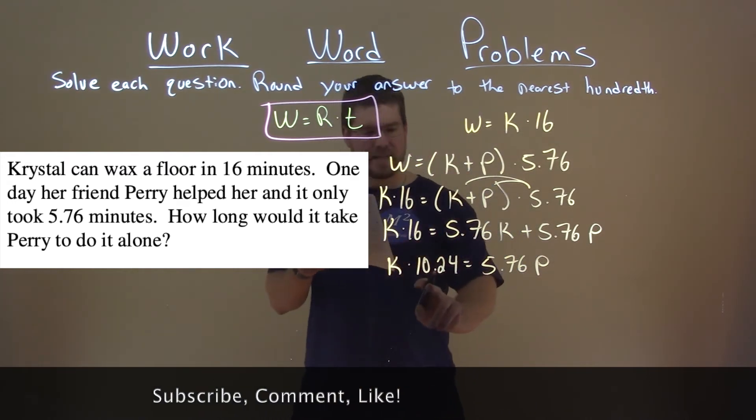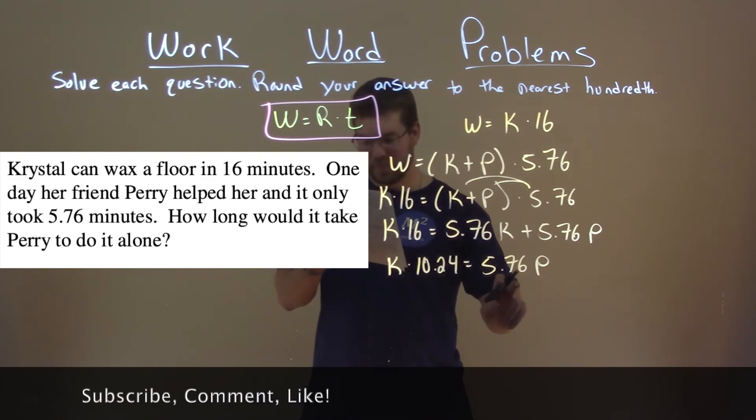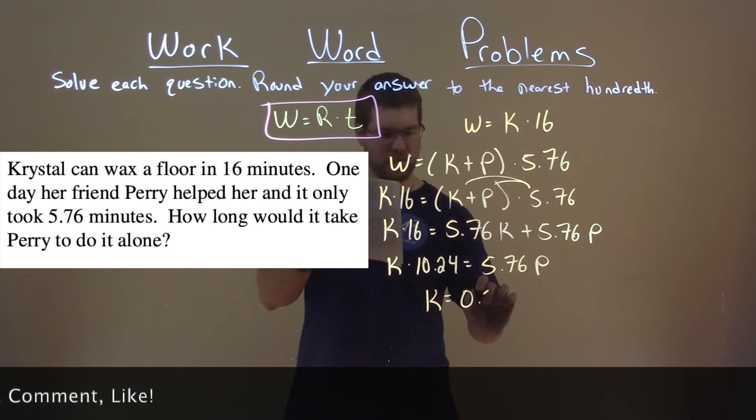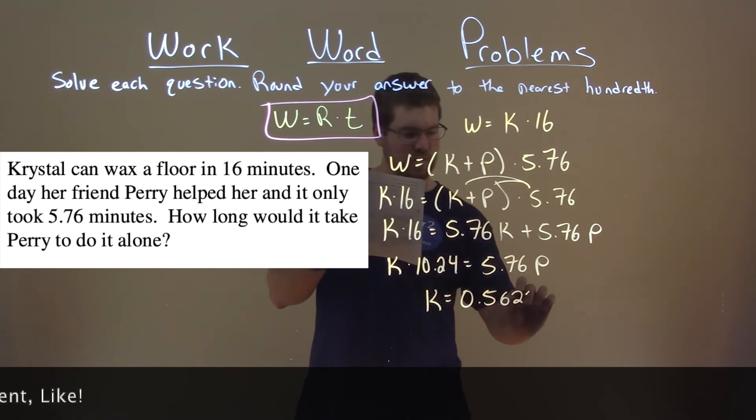We divide both sides by that 10.24, and we're left with k by itself here is equal to 0.5625p.